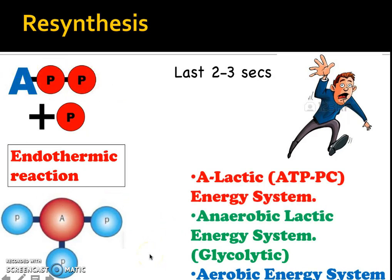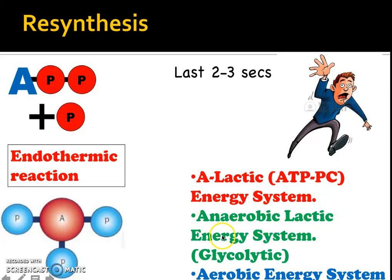How we replace ATP is the fundamental basis of the three energy systems within your body. You have your ATP-PC system — adenosine triphosphate phosphocreatine — also known as the alactic energy system. Then there is the anaerobic lactic energy system, which is glycolytic — it uses glycogen to resynthesize ATP. And last but not least, you have your aerobic energy system.